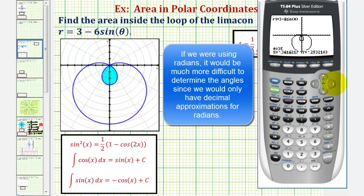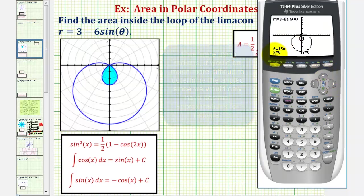As theta increases from the pole, we're tracing out that inner loop, so this is the interval we'll use for the definite integral. Keep going until we return to the pole. At 150 degrees we're back at the pole and have traced the inner loop. So the interval is from 30 degrees to 150 degrees, which is from pi over six radians to five pi over six radians.